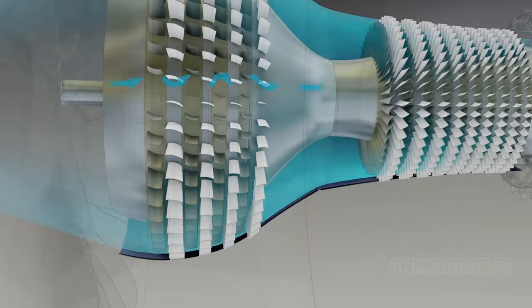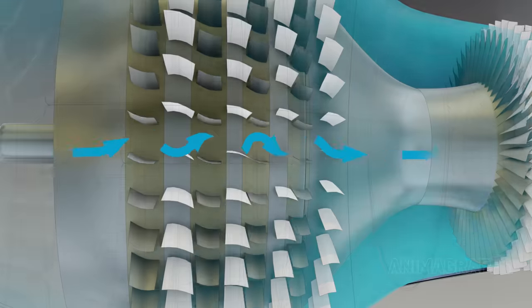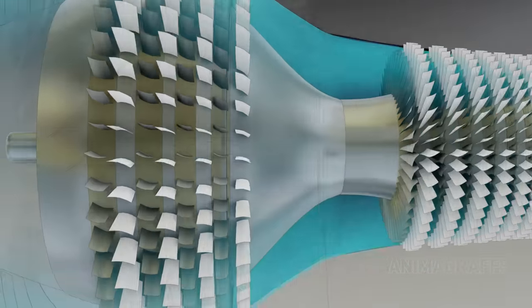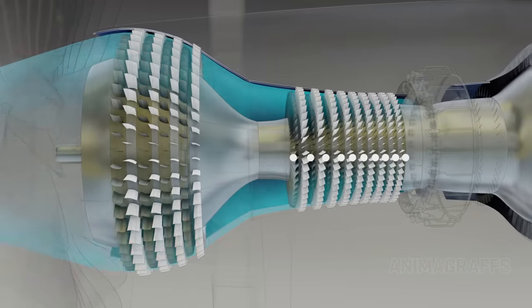Rotor blades swirl the air as they force it through the compressor. Stator vanes slow this swirling momentum in exchange for increased air pressure. The compressor has four low pressure and ten high-pressure stages.